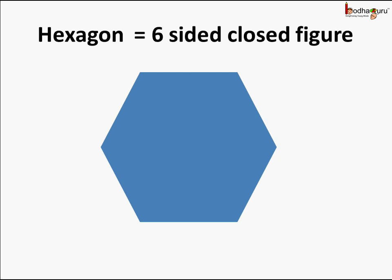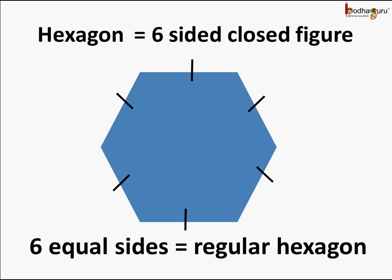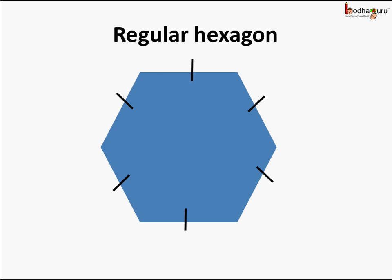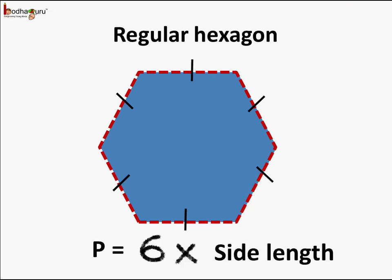If we think of a hexagon, it is a 6-sided closed figure. And when all the sides are of equal length, we can say it is a regular hexagon — a hexagon which has all 6 sides of equal length. The perimeter will be equal to 6 times the length of the side.